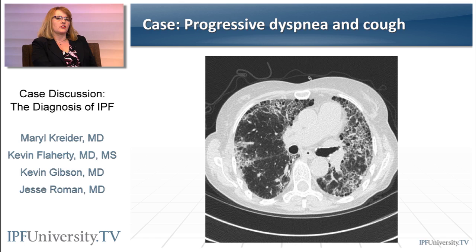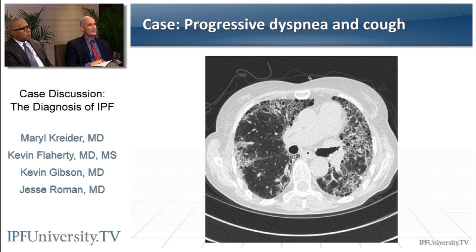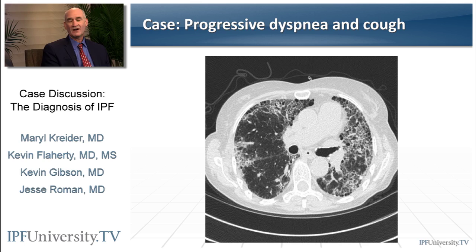With that history and this CT, what are the first few diseases you're beginning to think about? She clearly has a lot of interstitial changes on her CT scan — worse in the lower lobes, worse in the periphery. So we know she has interstitial lung disease causing her symptoms of cough and dyspnea. The question becomes whether there is an identifiable cause or whether this is one of the idiopathic interstitial pneumonias.